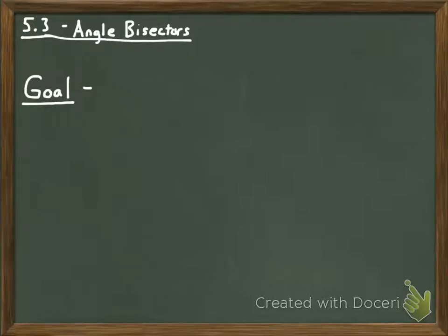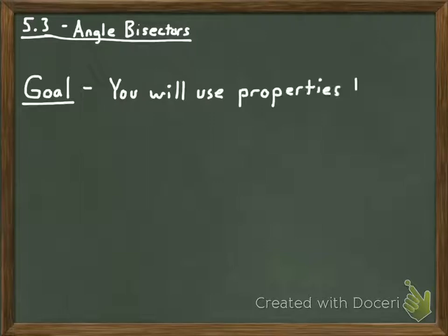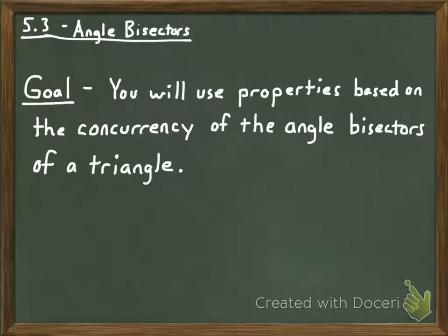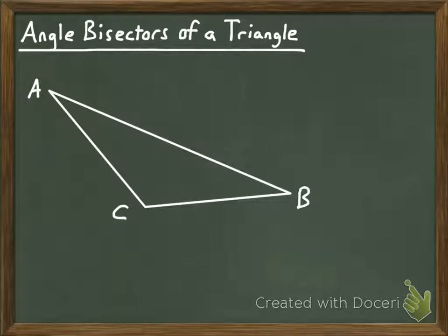Welcome guys. We're going to continue to talk about angle bisectors in this video and we're going to start putting them in the context of triangles. The goal is that you will use properties based on the concurrency of the angle bisectors of a triangle. Very similar to perpendicular bisectors, it turns out the angle bisectors are also concurrent lines when you draw all of the angle bisectors in a triangle.